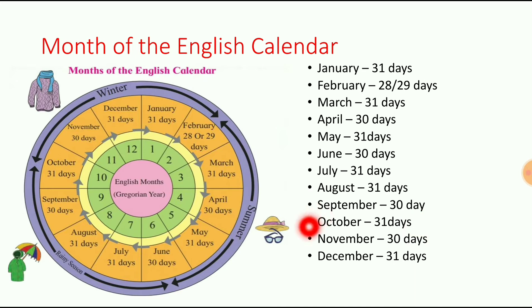Next: October. O-C-T-O-B-E-R, October. October is the 10th month. October has 31 days.